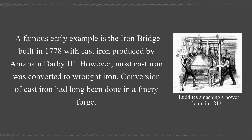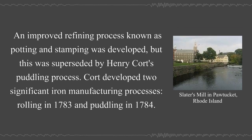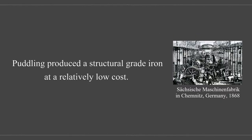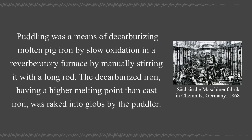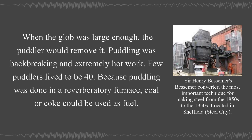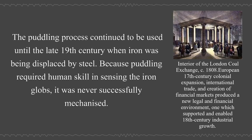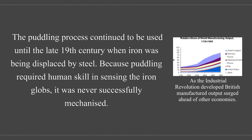Most cast iron was converted to wrought iron. Conversion of cast iron had long been done in a finery forge; an improved refining process known as potting and stamping was developed, but this was superseded by Henry Cort's puddling process. Cort developed two significant iron manufacturing processes: rolling in 1783 and puddling in 1784. Puddling was a means of decarburizing molten pig iron by slow oxidation in a reverberatory furnace by manually stirring it with a long rod. The decarburized iron was raked into globs by the puddler. Puddling was back-breaking and extremely hot work—few puddlers lived to be 40. Because puddling was done in a reverberatory furnace, coal or coke could be used as fuel. Because puddling required human skill in sensing the iron globs, it was never successfully mechanized.